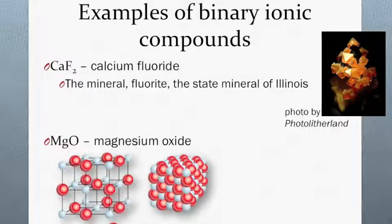It's the state mineral for Illinois, but when it's the mineral we call it fluorite. Magnesium oxide is also a binary ionic compound, and a model of its crystal structure is shown here. All of these compounds are binary ionic compounds because they form from one metal and one non-metal. In other words, they form from only two different elements.